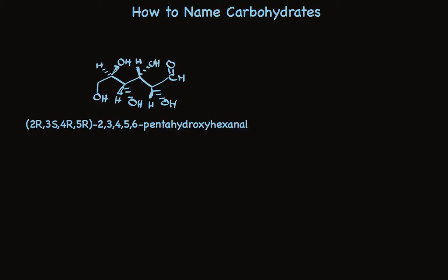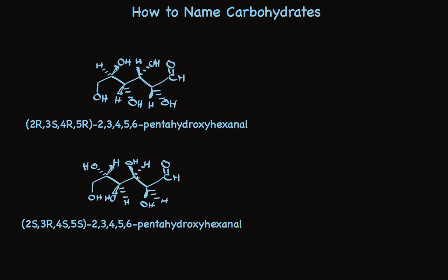If we were talking about the enantiomer, we'd have to write the different configuration at each one of these centers, change all the configuration letters here, and have the same name for the rest of it. All this just to show the two enantiomers of glucose.